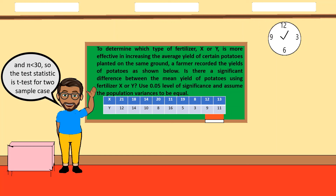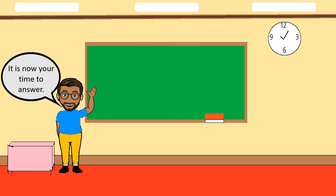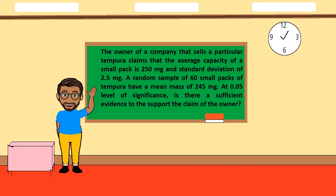It is now your turn. Determine the appropriate test statistic for this problem: The owner of a company that sells a particular tempura claims the average capacity of a small pack is 250 milligrams with a standard deviation of 2.5 milligrams. A random sample of 60 small packs has a mean mass of 245 milligrams. At 0.05 level of significance, is there sufficient evidence to support the owner's claim?